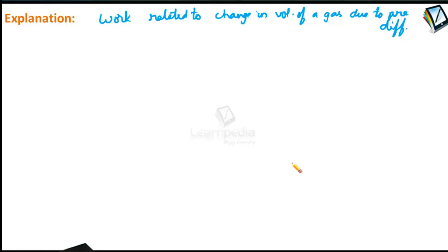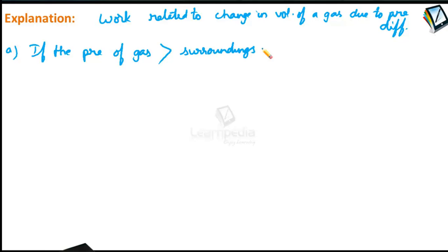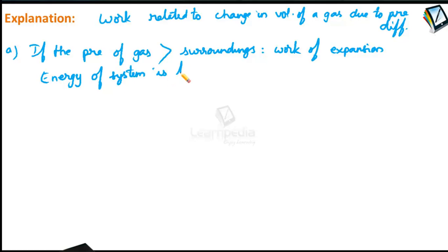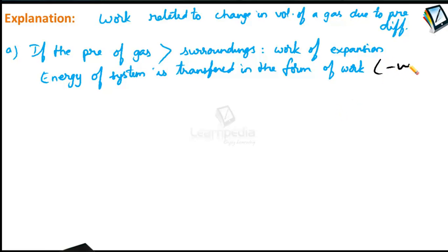Let us take two different cases. First: if the pressure of the gas is greater than that of the surroundings, then work of expansion takes place. The gas expands, meaning work is done by the system on the surroundings. Thus the energy of the system is transferred in the form of work into the surroundings. According to IUPAC convention, this work of expansion is assigned a negative value.